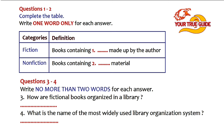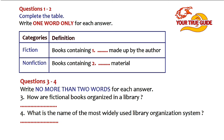Every library houses a collection of books. Many libraries also have periodicals, films and records. All the books in a library can be classified under two main categories: fiction and non-fiction. Books of fiction contain stories that were made up by the author. Books of non-fiction contain factual material. When doing research, you use non-fiction books because you are looking for factual information.